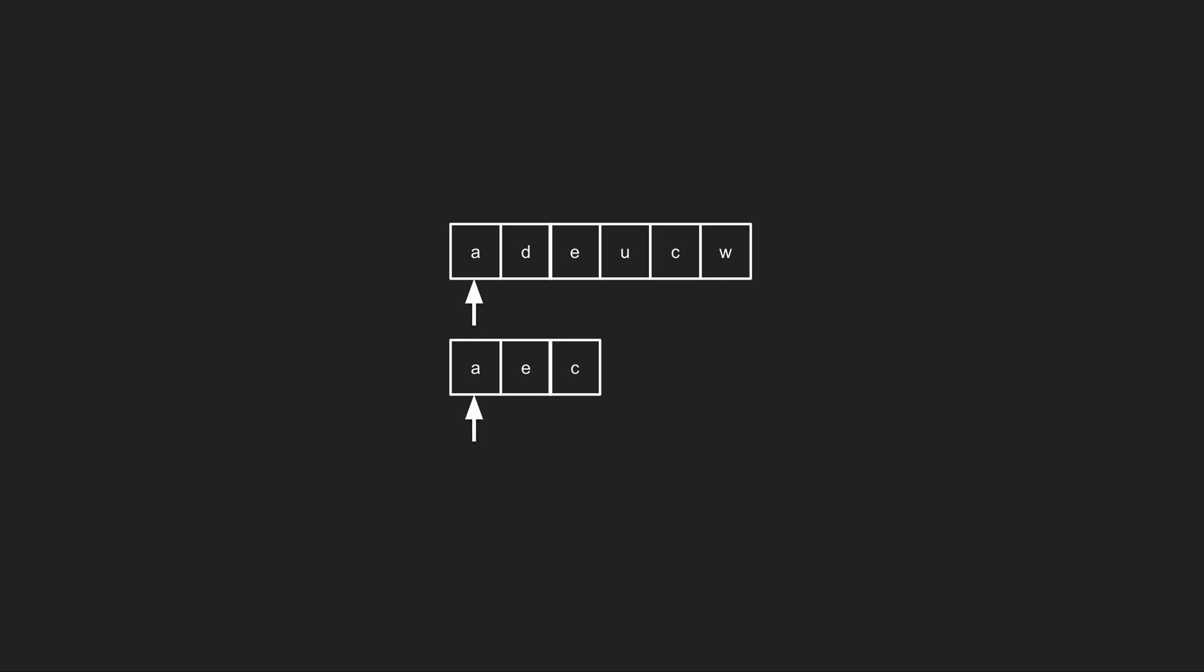If the characters are equal, we move both pointers. If the characters are not equal, we move the pointer only in the m string.